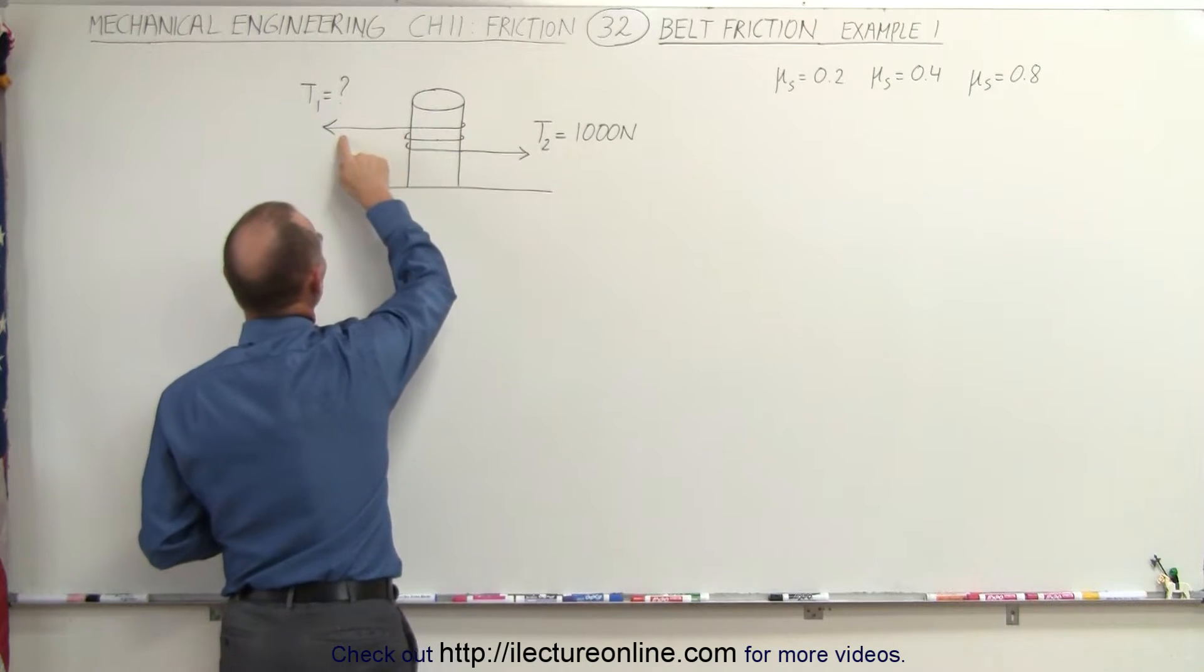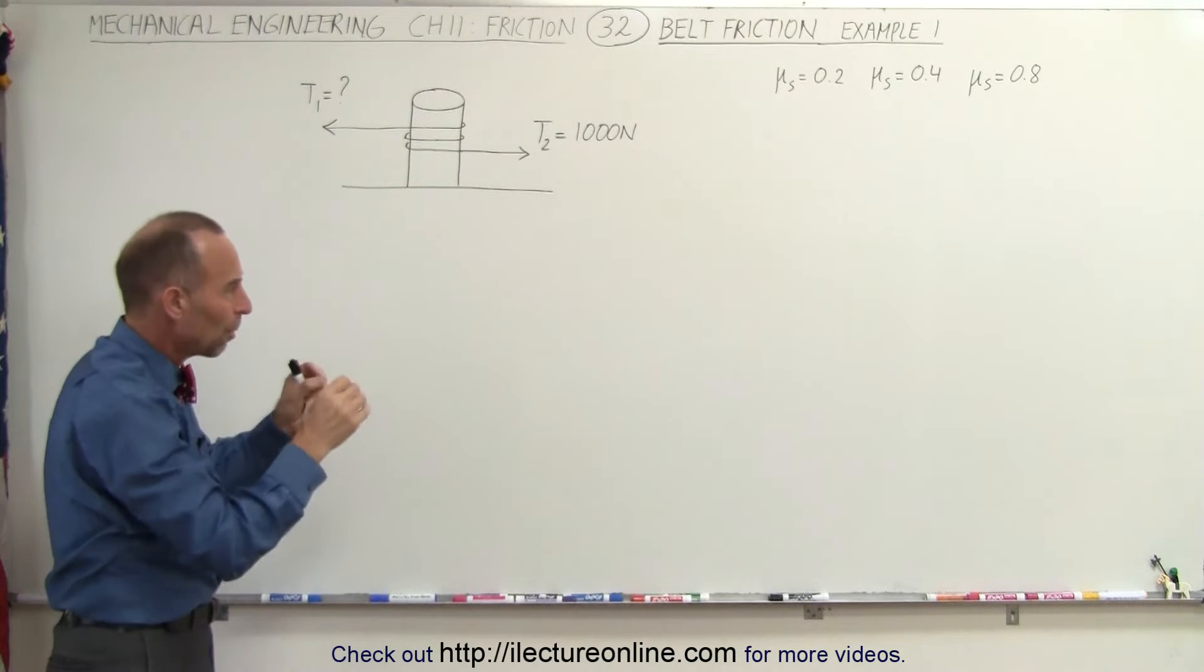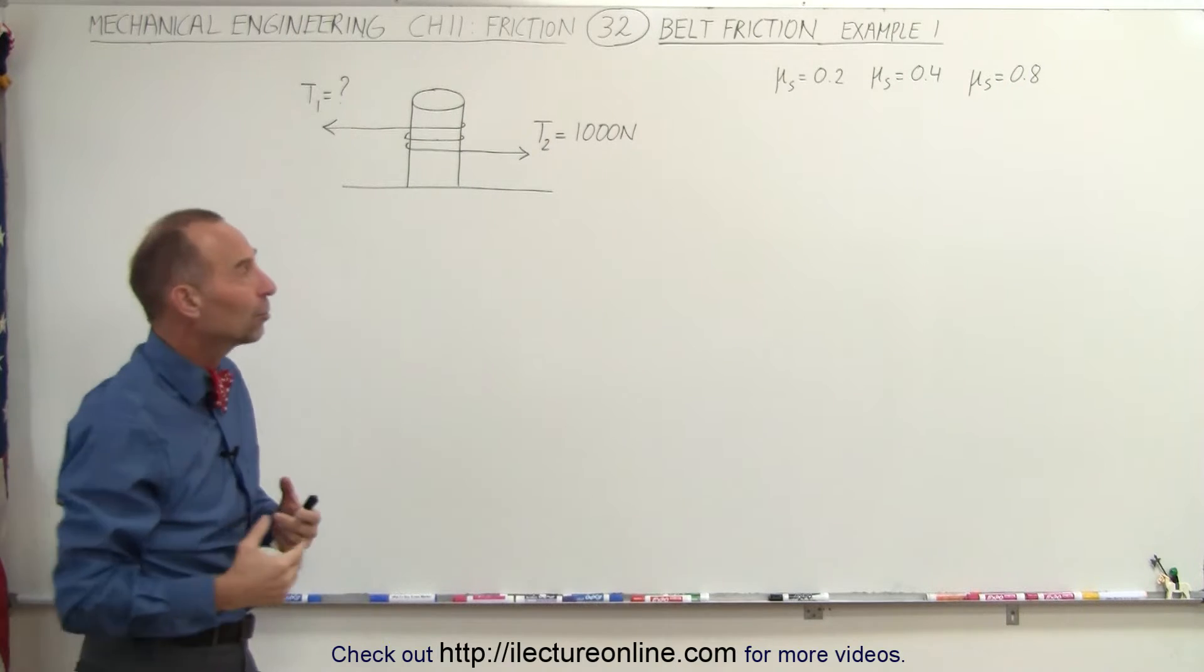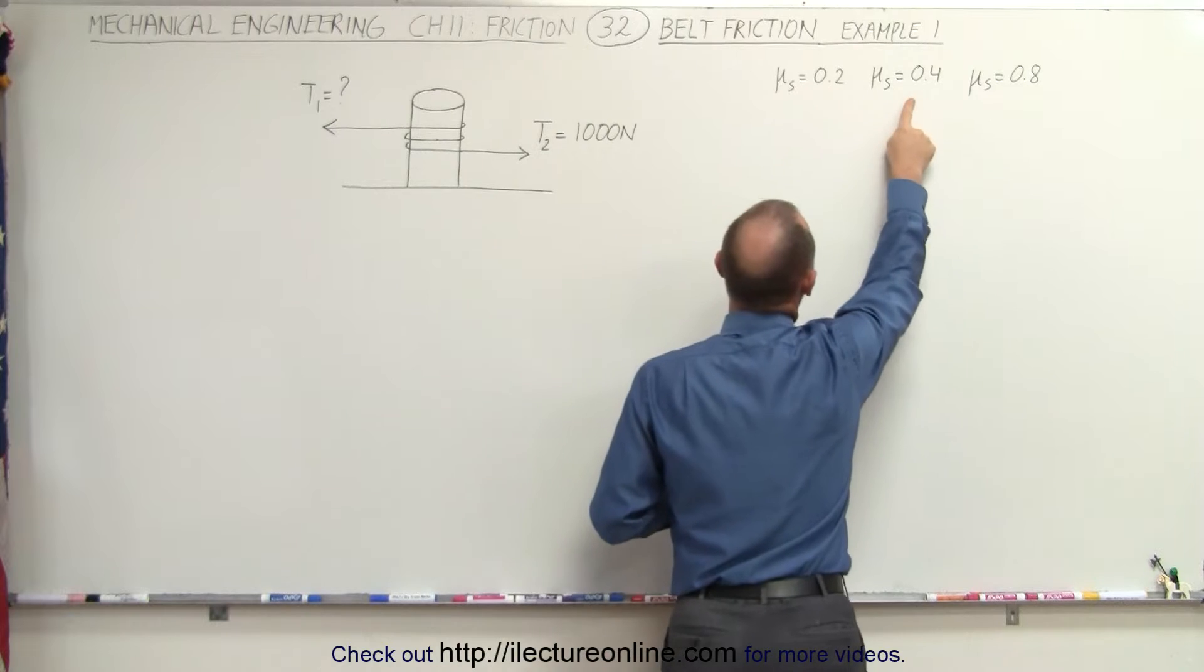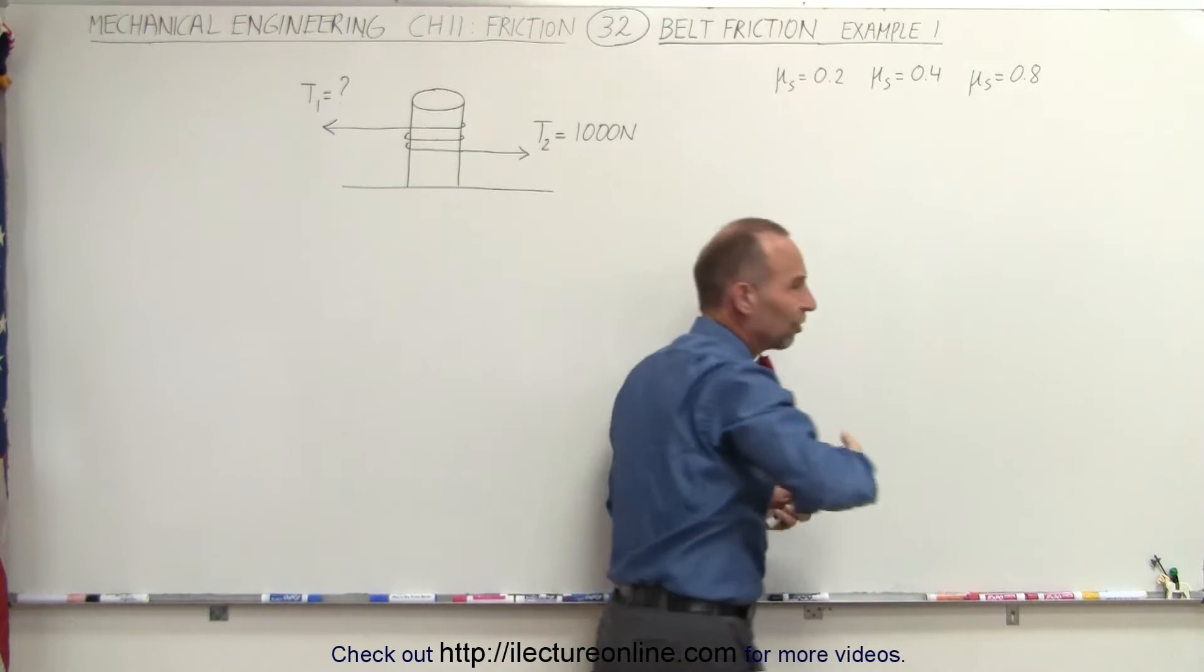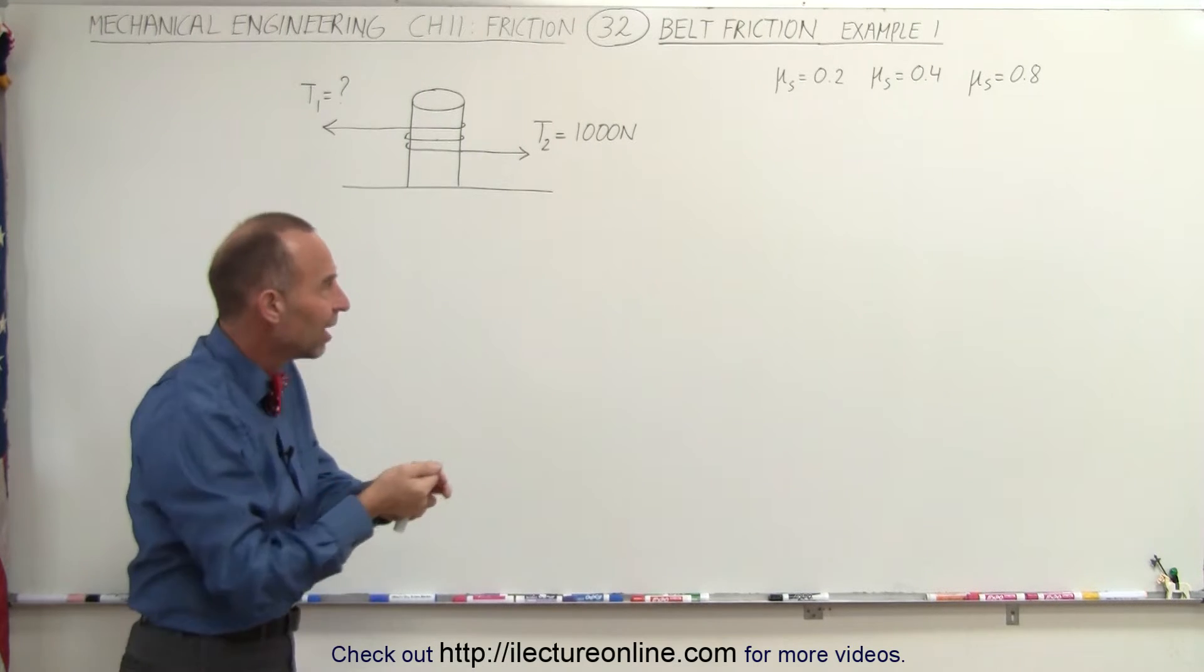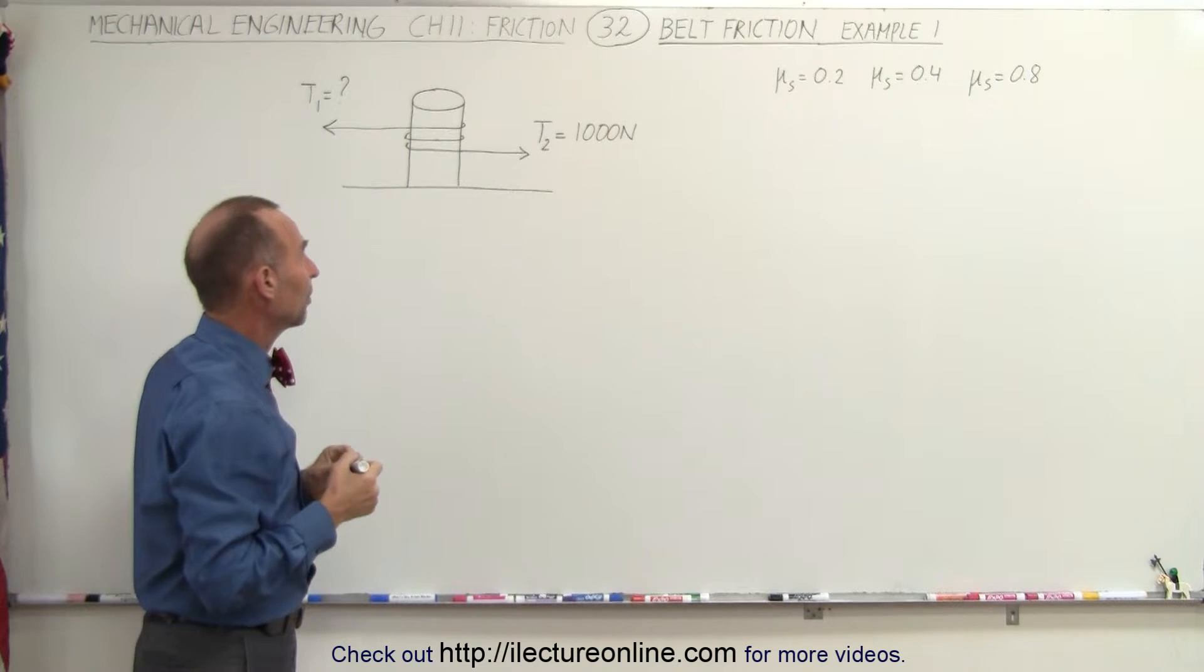The question is how much force is required over here to hold the rope from slipping so that the rope is stationary. We're going to calculate it three times with three different coefficients of static friction: 0.2, 0.4, and 0.8. Notice that each time we double the coefficient of friction from before to see what effect it will have on the amount of tension required or force required to keep the rope from slipping.